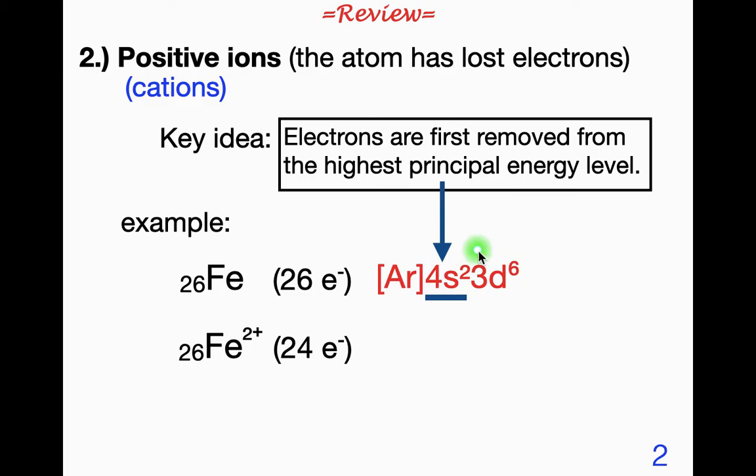It's from the highest principal energy level. Remember that's the n equals 1, n equals 2, n equals 3. Well n equals 4 is a higher energy level than n equals 3. So those electrons are removed first. Remember the overlapping that takes place as you go higher and higher. And so regardless of the fact that the 3ds are added after the 4s, the 4s still belong to a higher energy level.